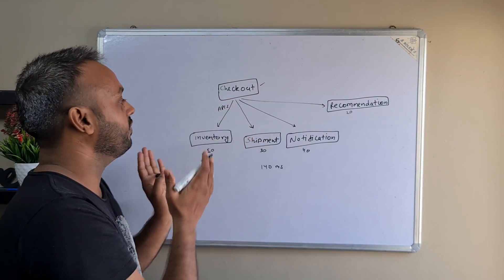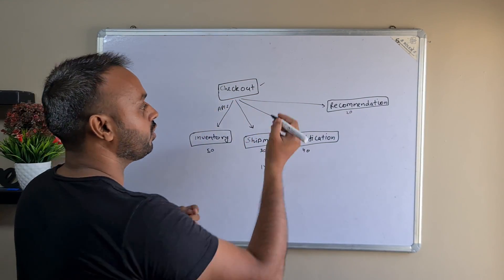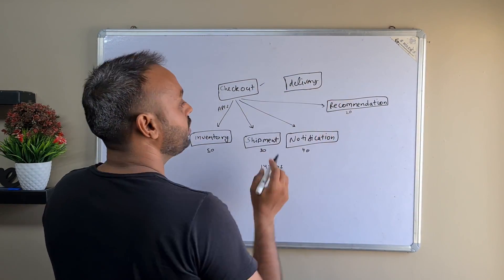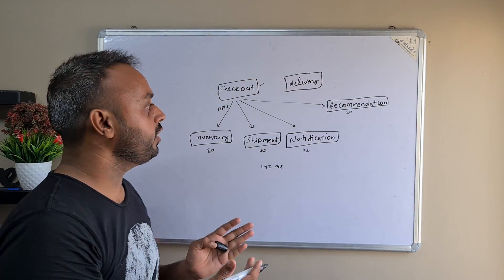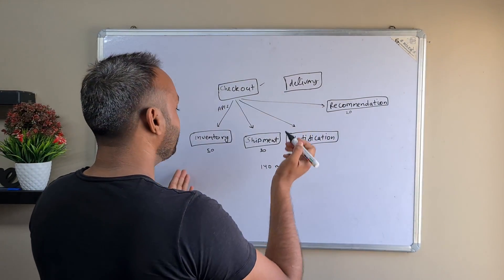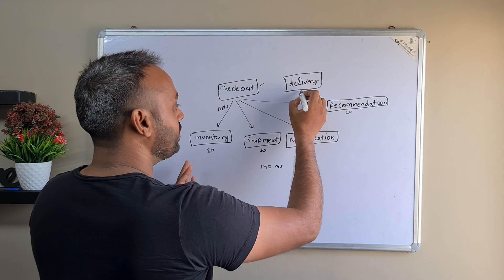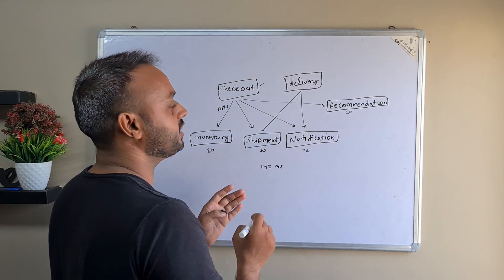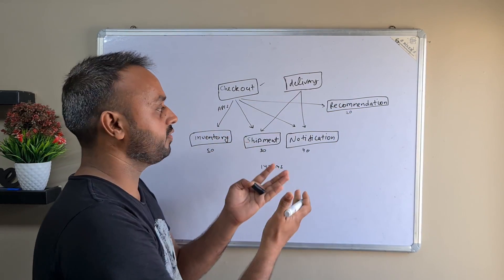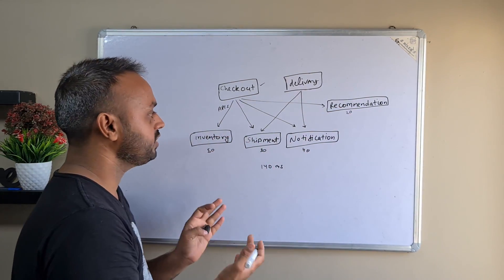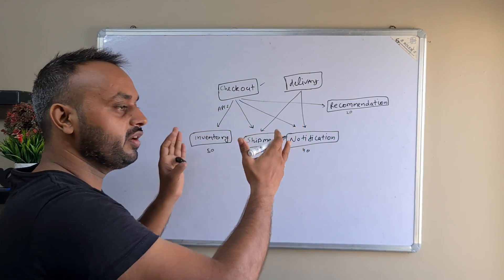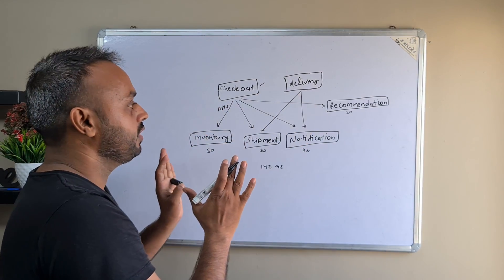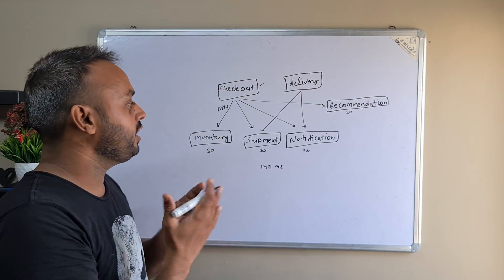There will also be hundreds of these kinds of events. Let's say we also draw a delivery event. In the case of delivery, similar things will happen — delivery will mark the shipment as done, send a notification, and call other services. As you can see, there will be hundreds of these kinds of events and this will become a mesh.